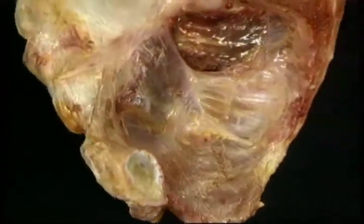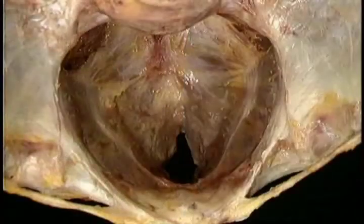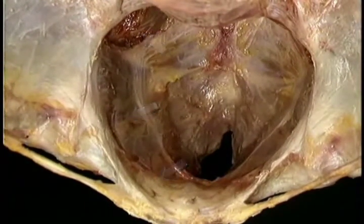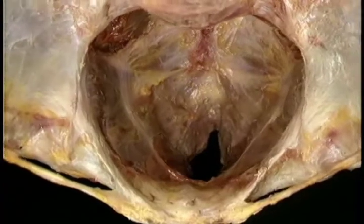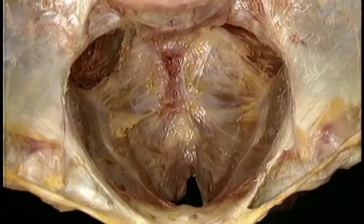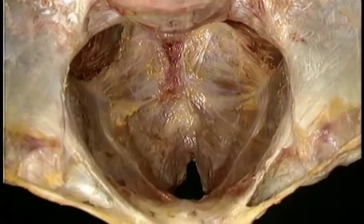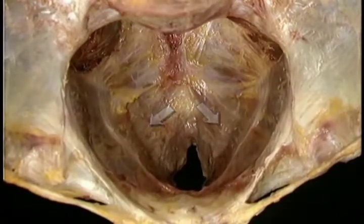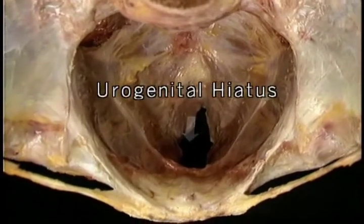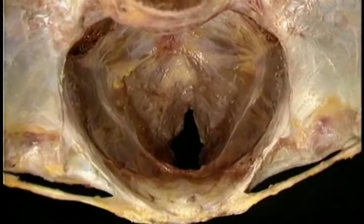Now that we've looked at one levator ani muscle, let's look at the two of them together from above. Here's the upper part of obturator internus, the tendinous arch, the ischial spines, the tip of the coccyx, the coccygeus muscles, and the two levator ani muscles. Between them in front there's a gap, the urogenital hiatus, through which pass the rectum, the urethra, and in the female, the vagina.